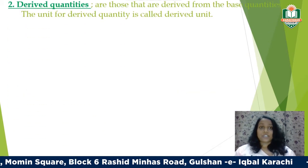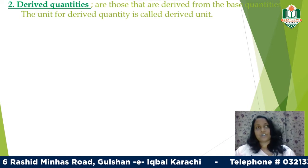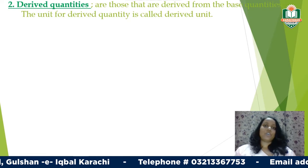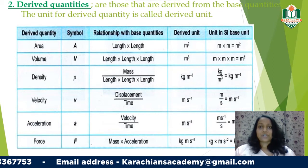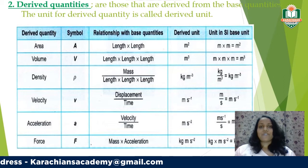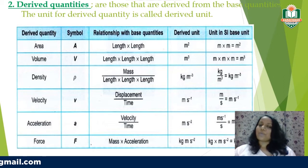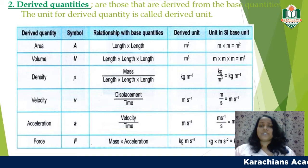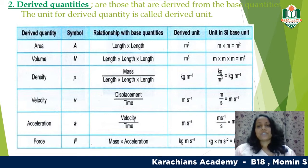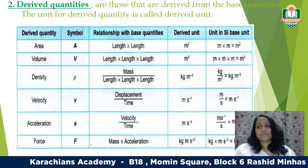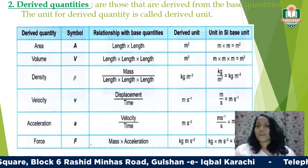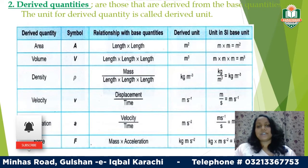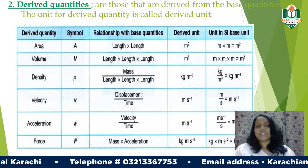The second type is derived quantities — these come from base quantities or from other derived quantities. For example, area is length multiplied by length. For a rectangle it's length times breadth, so the unit is meter squared. Density is mass divided by volume, and volume is length cubed, so the unit is kilograms per meter cubed.